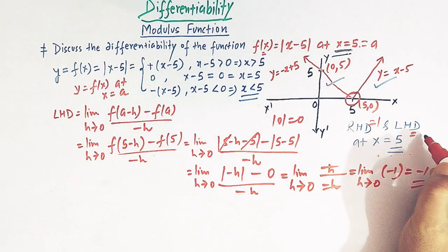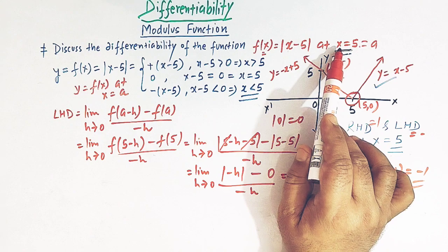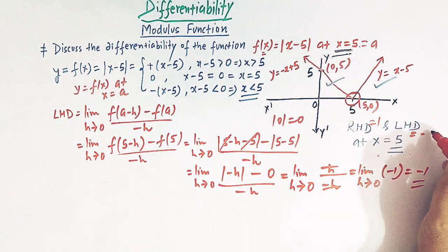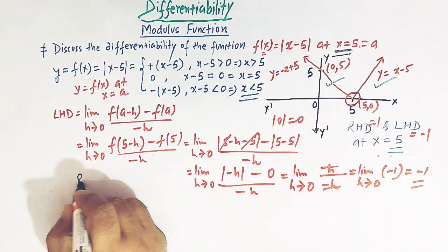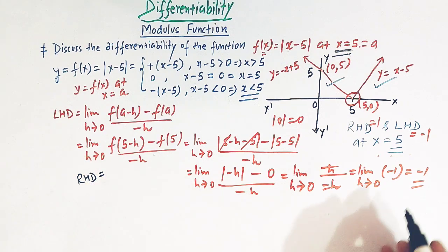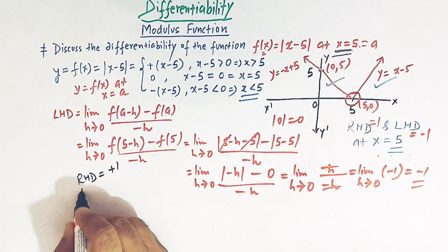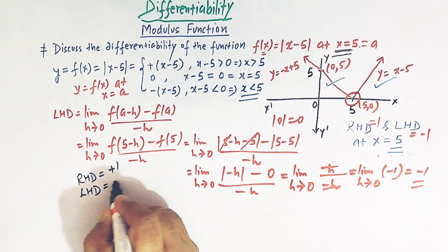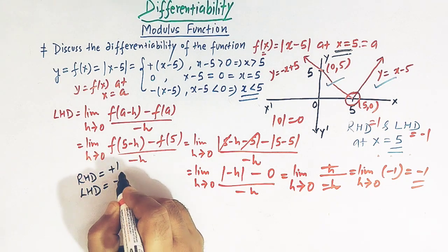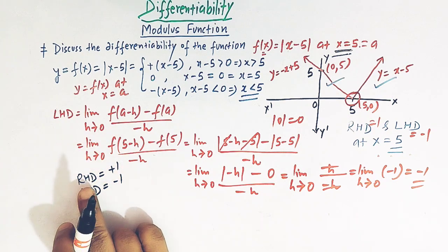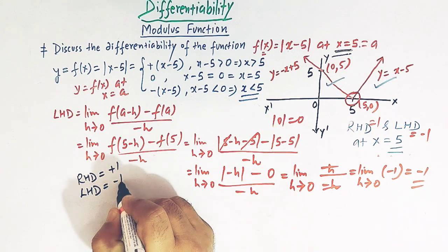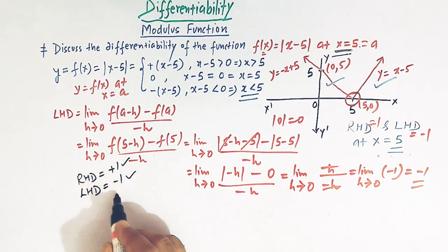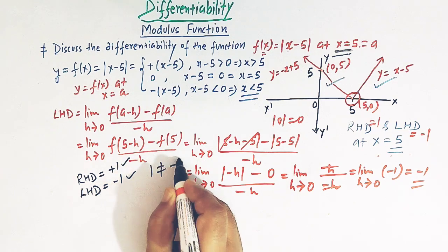So the left hand derivative of this function at x = 5 is -1. We have seen that the right hand derivative is +1 and the left hand derivative is -1.